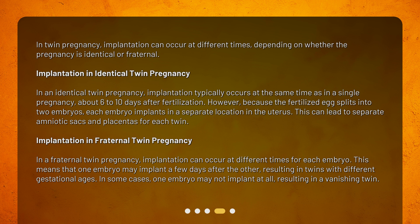Implantation in fraternal twin pregnancy: In a fraternal twin pregnancy, implantation can occur at different times for each embryo. This means that one embryo may implant a few days after the other, resulting in twins with different gestational ages. In some cases, one embryo may not implant at all, resulting in a vanishing twin.